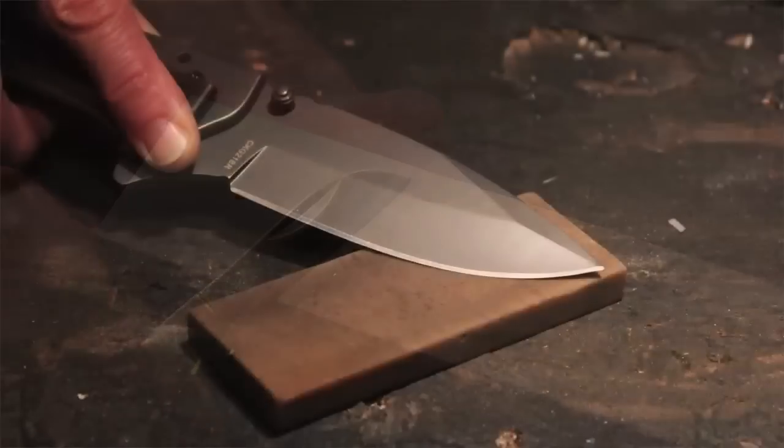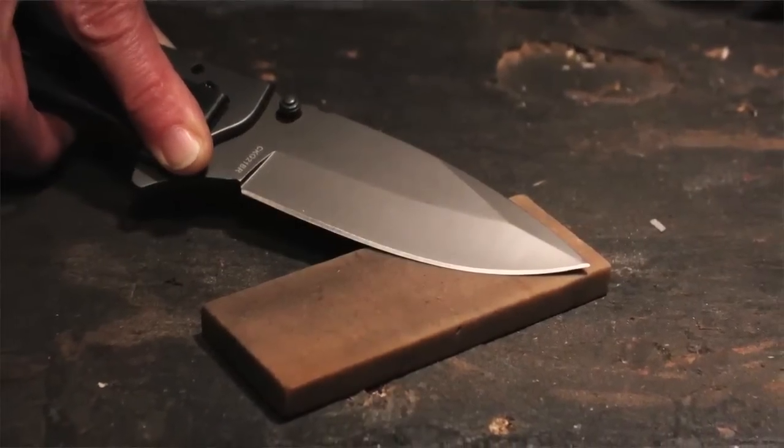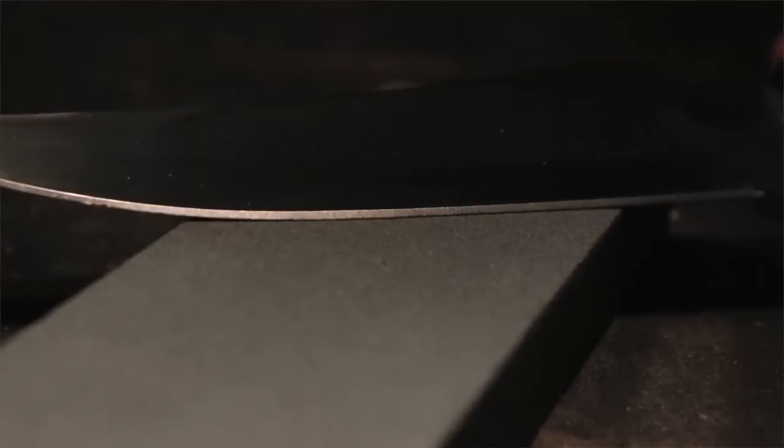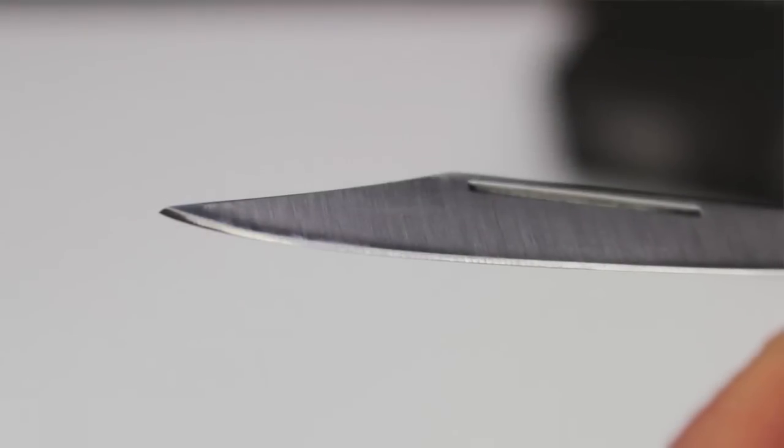But the number one problem that most people have when sharpening their knife with a stone is keeping a consistent angle between their blade and the sharpener. So here's a secret that will help you get a consistent sharp edge on your knife every time.